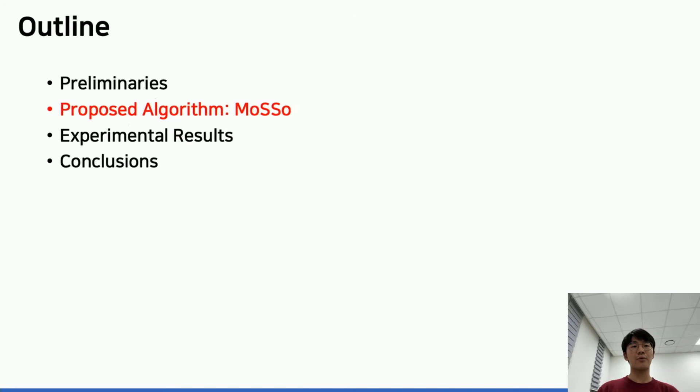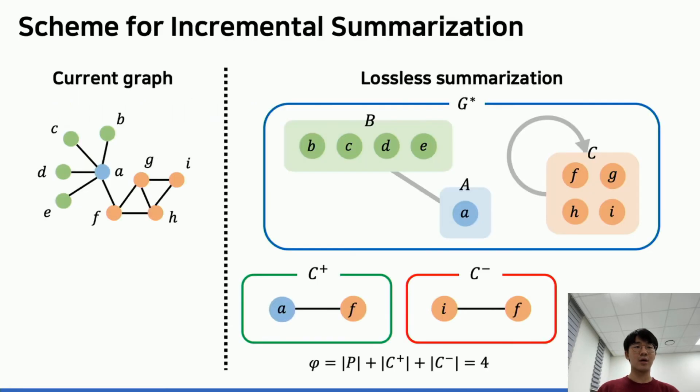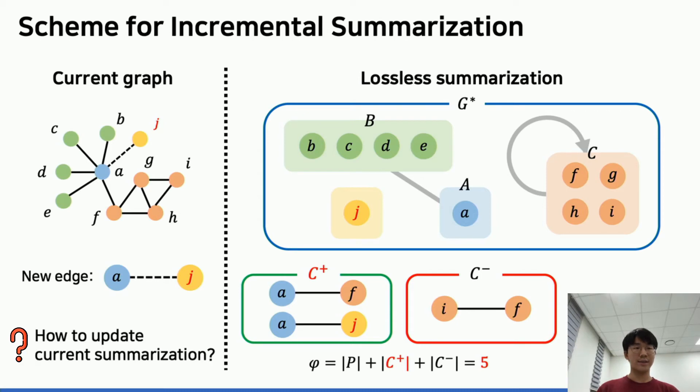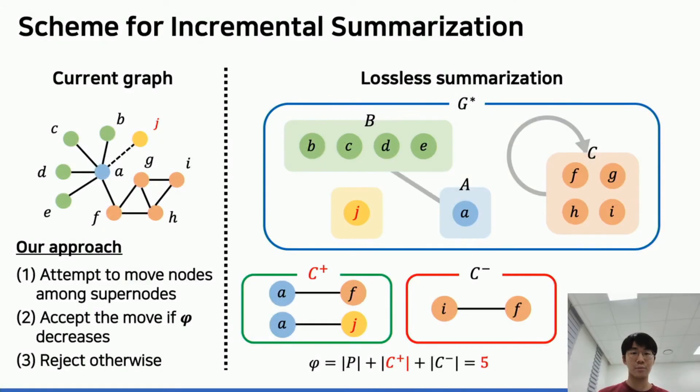Now let's see how we tackle these problems. In order to explain our basic approach, we illustrate the output representation in a more descriptive way. Now a new edge has just arrived. Our approach is remarkably simple: just try to move some nodes into other super nodes. Then we would get a different partition of nodes.